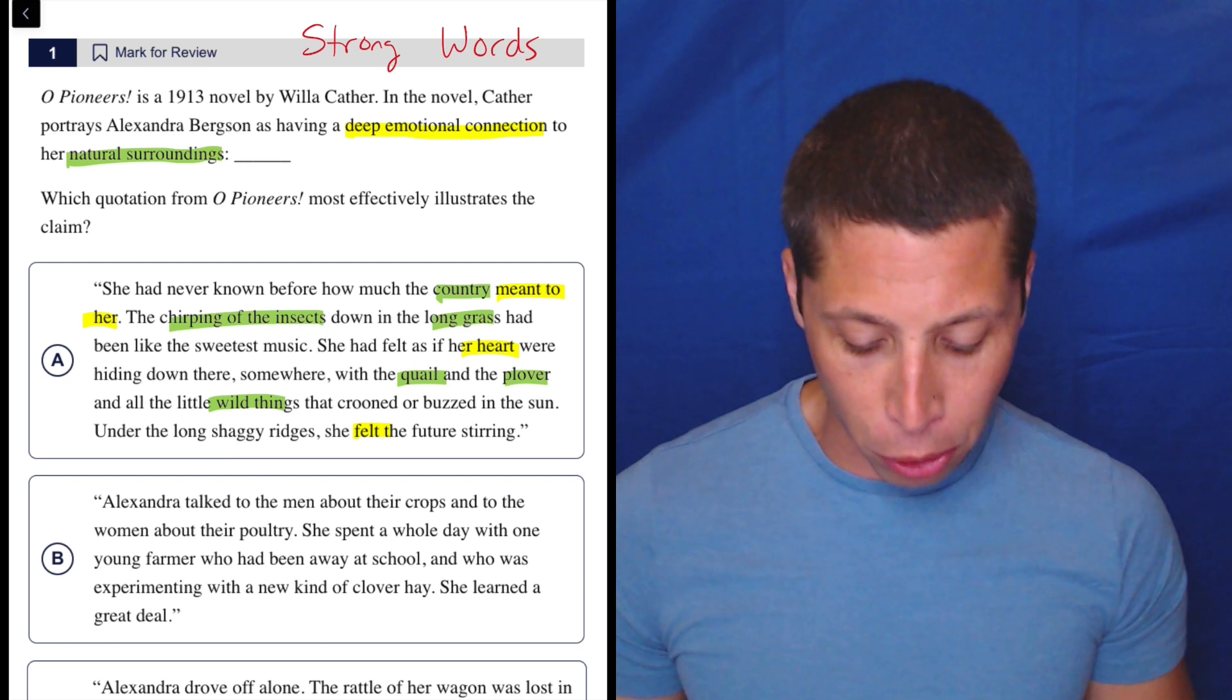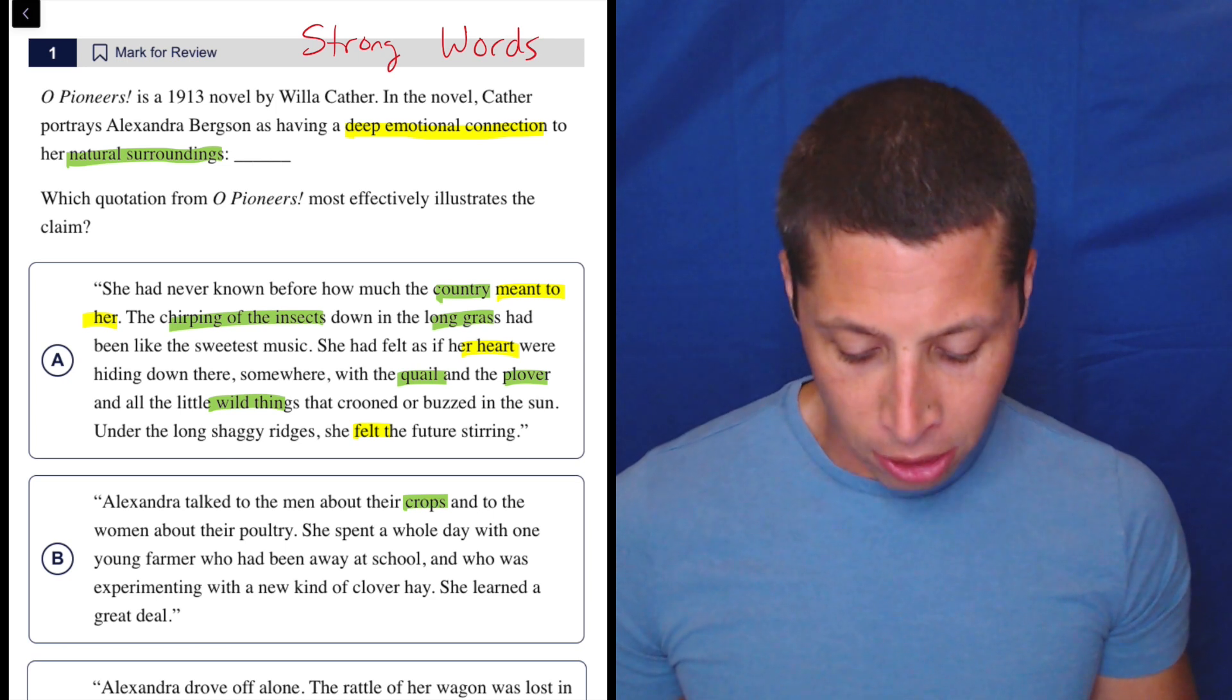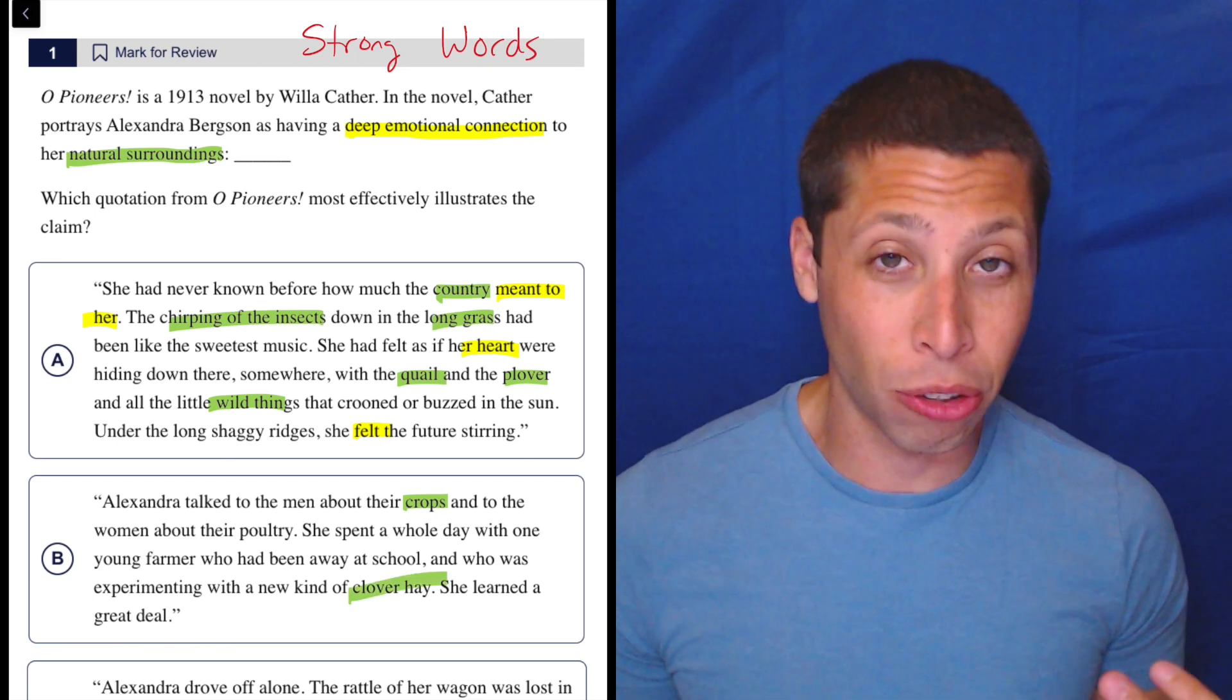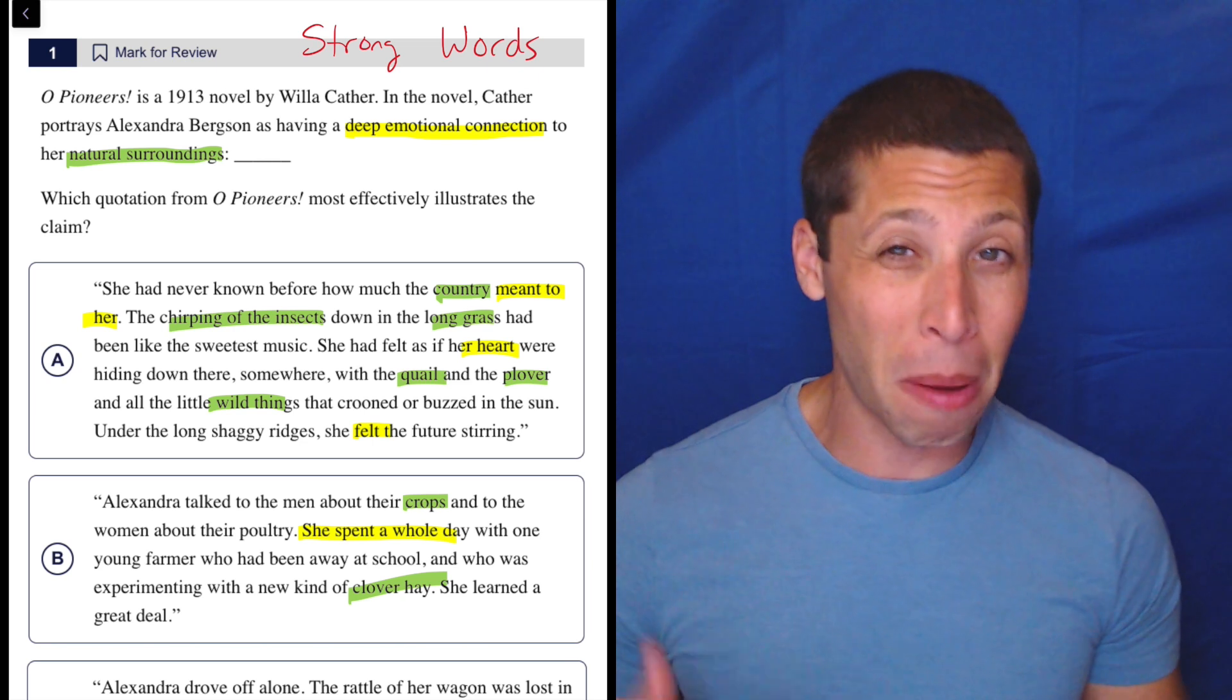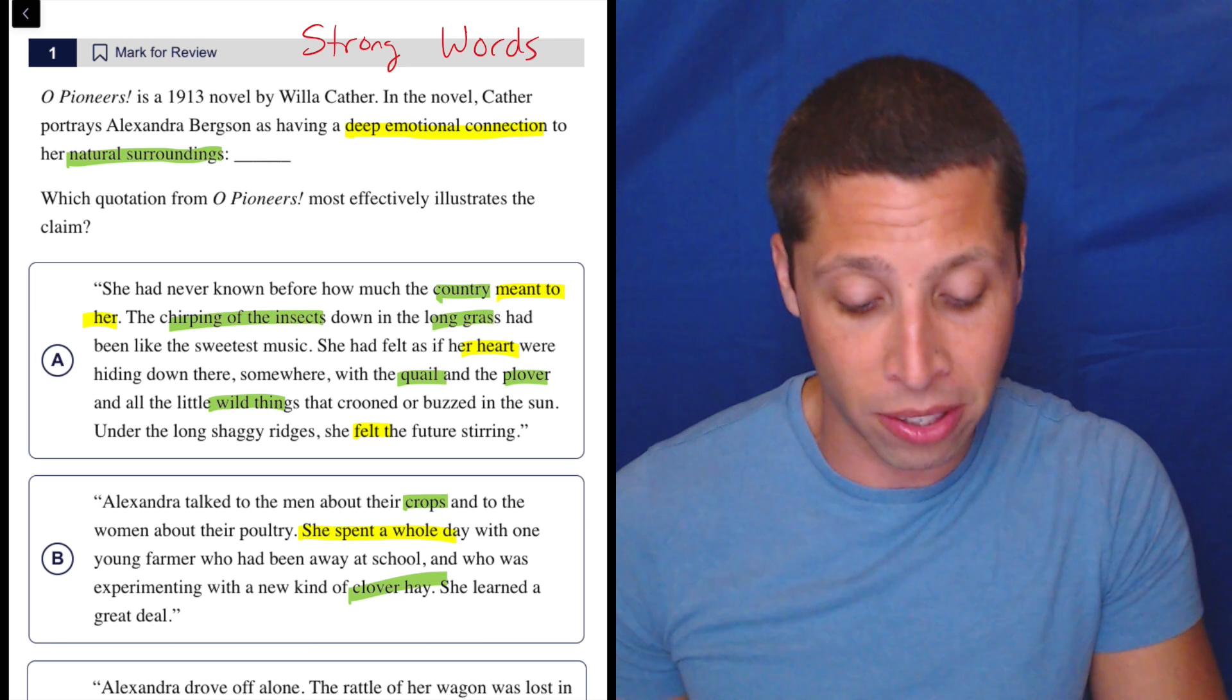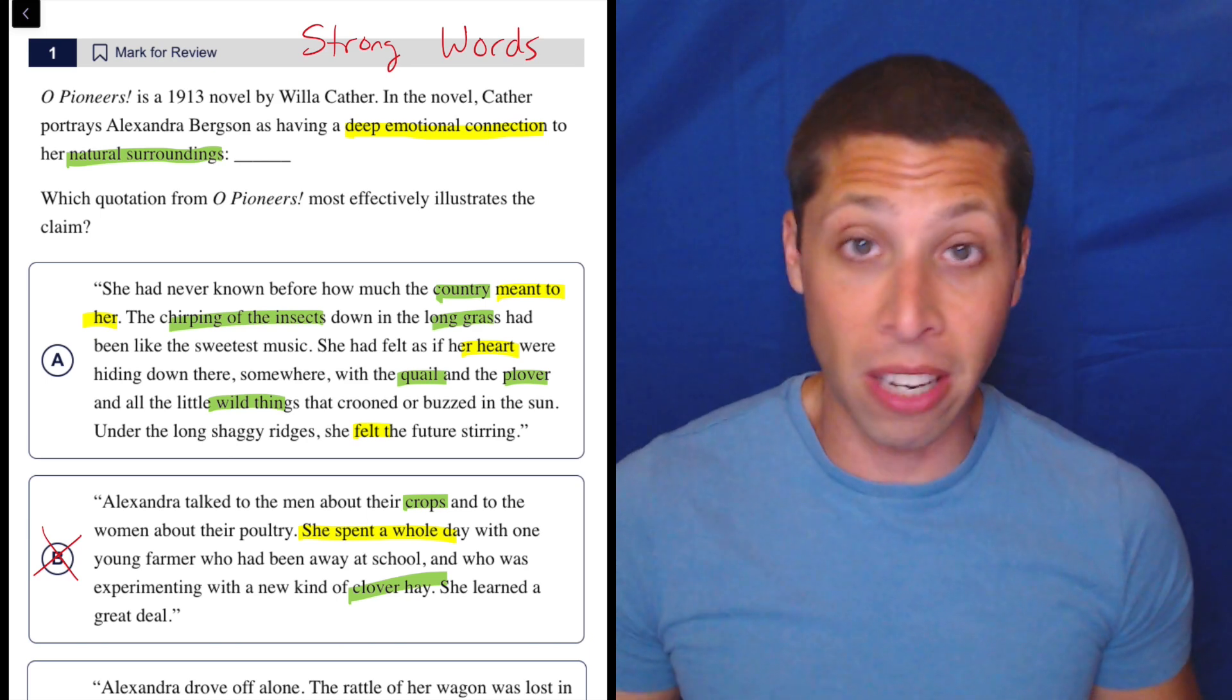Let's just take a look at the other choices just to be sure. Choice B, Alexander talked to the man about their crops and to the women about their poultry. Okay, maybe the crops are natural surroundings. She spent a whole day with one young farmer who had been away at school and who was experimenting with a new kind of clover hay. Okay, so maybe something about the hay. We can really stretch the farmer to be the natural surroundings, but I don't see any sort of deep emotional connection. The only thing I can maybe stretch here is that she spent the whole day doing it, so maybe it really meant something to her. But notice that's me adding another layer there. It's not obviously the case in the choice. So if I were choosing between A, which had a lot of connections, and B, where I feel like I'm stretching it, I'm going to pick A.